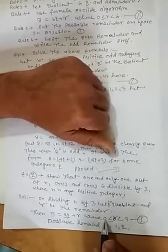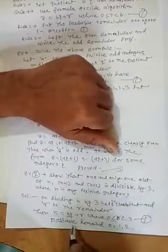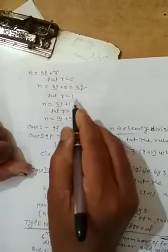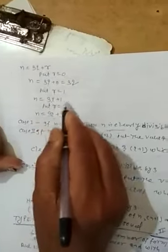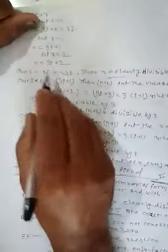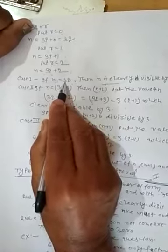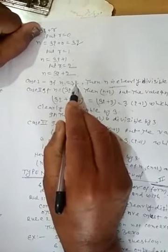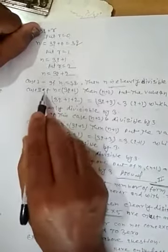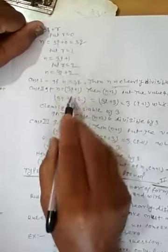So 0 less than or equal to r less than 3. If r equals 0, then n equals 3q. If r equals 1, then n equals 3q plus 1. If r equals 2, then n equals 3q plus 2. Therefore, in each case, one of these consecutive integers is divisible by 3.